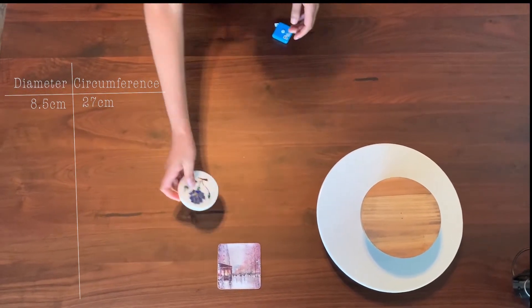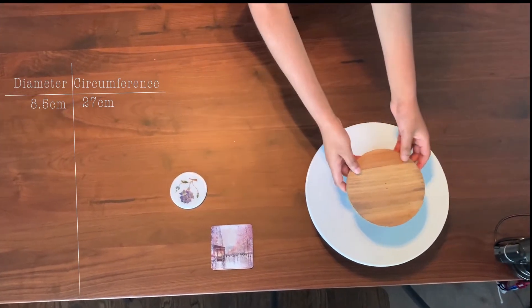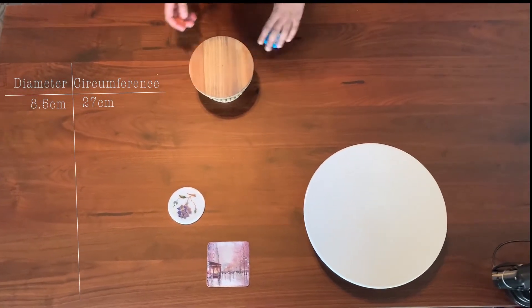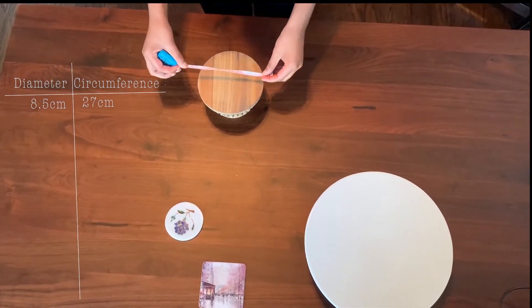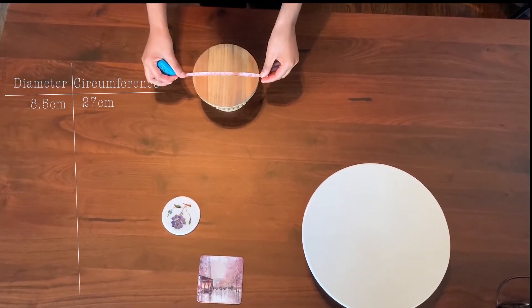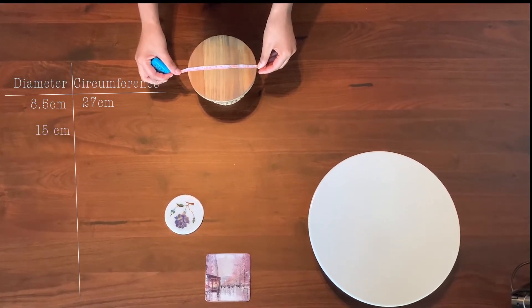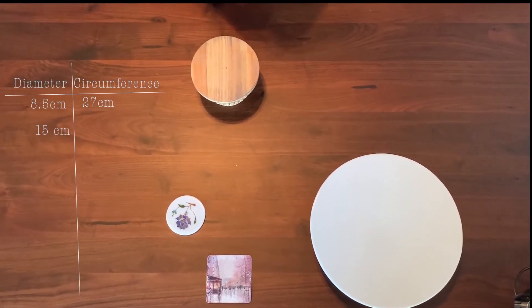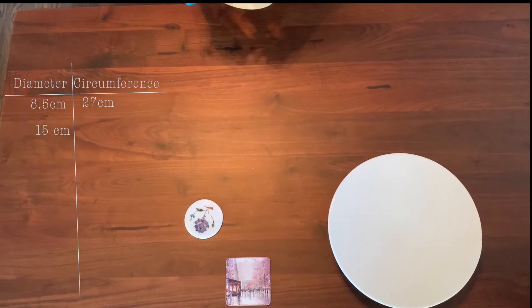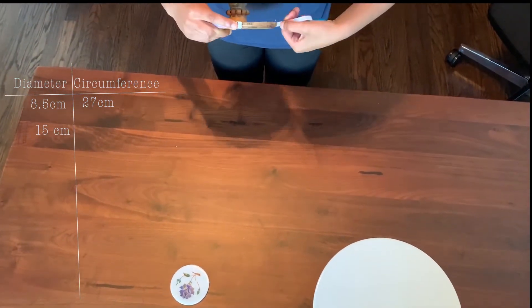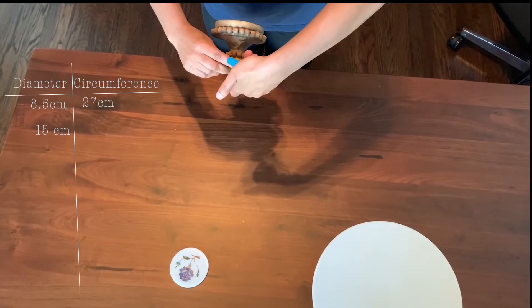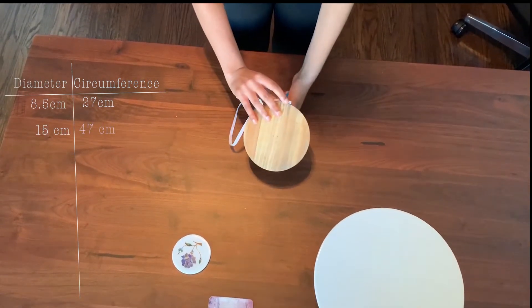Now, let's measure the diameter and circumference of this first cake stand. Using my measuring tape, I find that the diameter of this cake stand is about 15 centimeters. And the circumference should be around 47 centimeters.